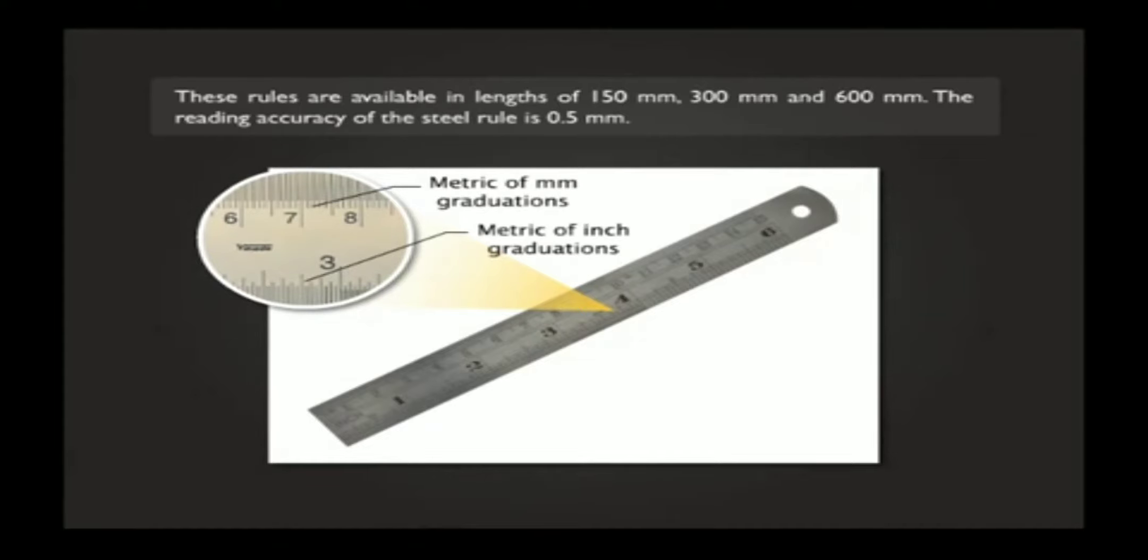The reading accuracy of the steel roll is 0.5 mm.